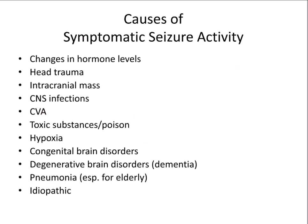This slide details some causes of symptomatic seizure activity. Patients could have changes in hormone levels, head trauma, an intracranial mass or tumor, infection, stroke, exposure to toxic substances or poison. They could be hypoxic — deprived of oxygen for whatever reason, such as a heart attack causing hypoxia. They may have a congenital brain disorder, dementia, or pneumonia, particularly in the elderly. Or the seizures could be idiopathic, meaning nobody knows what causes them.